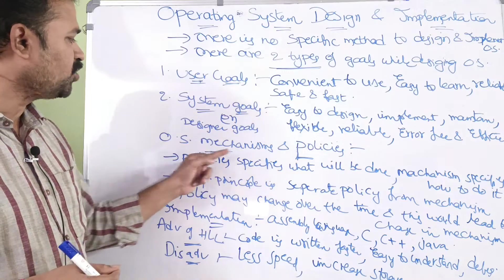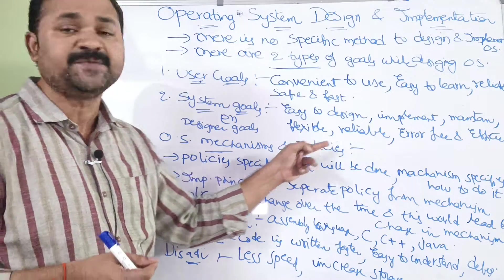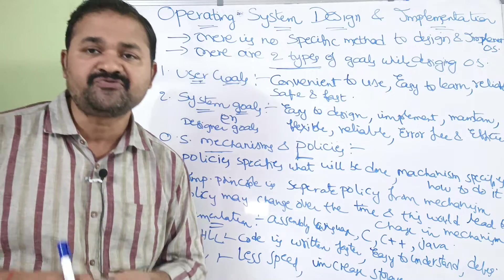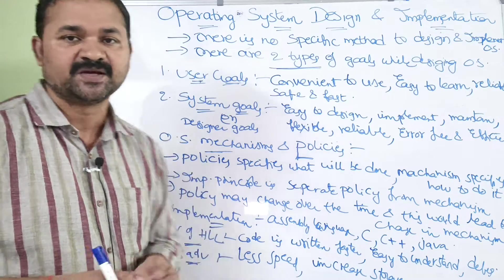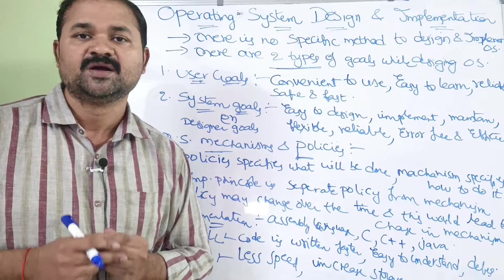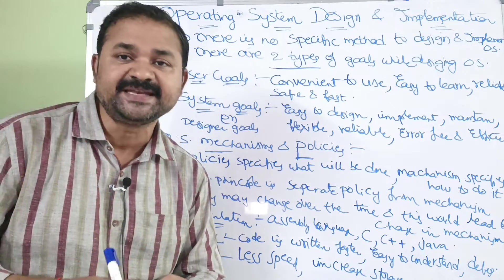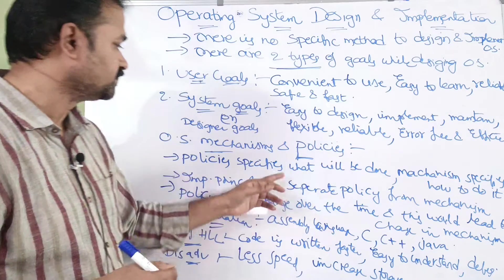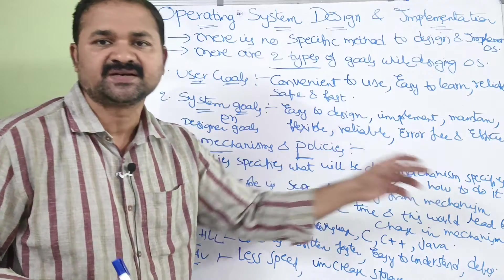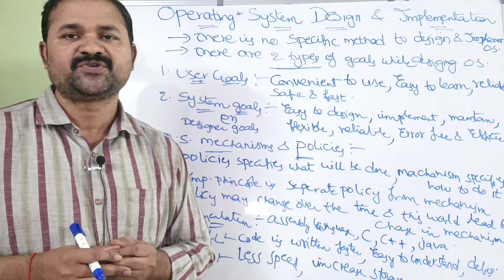Now let us see about operating system mechanisms and policies. These two are software engineering principles. First let us see what is a policy. Policy specifies what will be done. Various mechanisms specify how to do that.